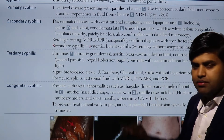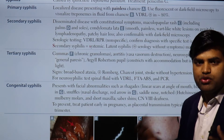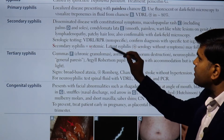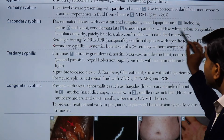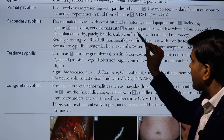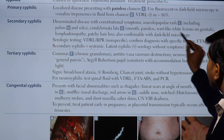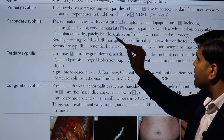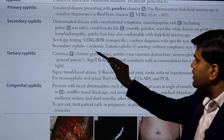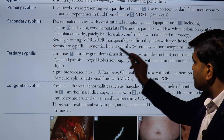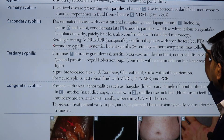Moving to secondary syphilis: secondary syphilis is now disseminated all over the body — it is a hematogenous spread. Secondary syphilis is a disseminated disease with constitutional symptoms: maculopapular rash including palms and soles, condylomata lata (smooth, painless, wart-like lesions on the genitalia), lymphadenopathy, and patchy hair loss. Confirmed with dark field microscopy; serological testing with VDRL/RPR, confirmed by specific tests like FTA-ABS or TPHA.